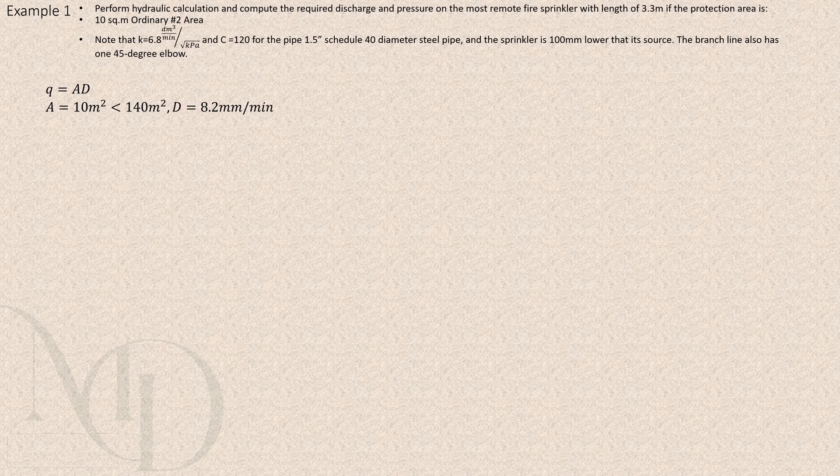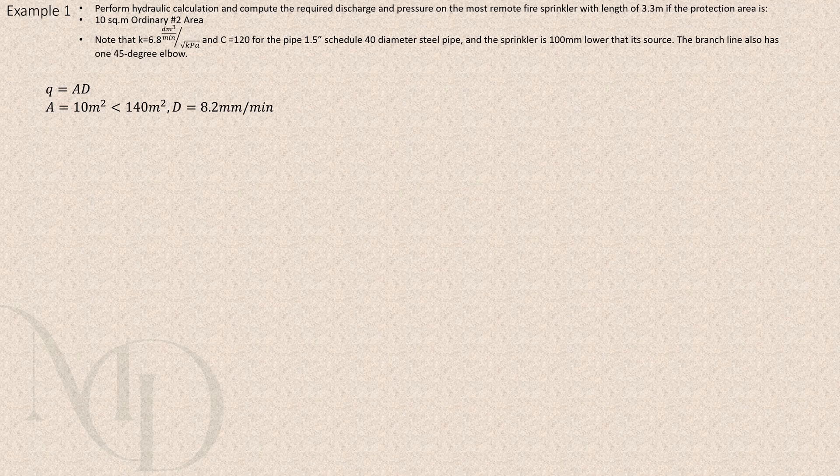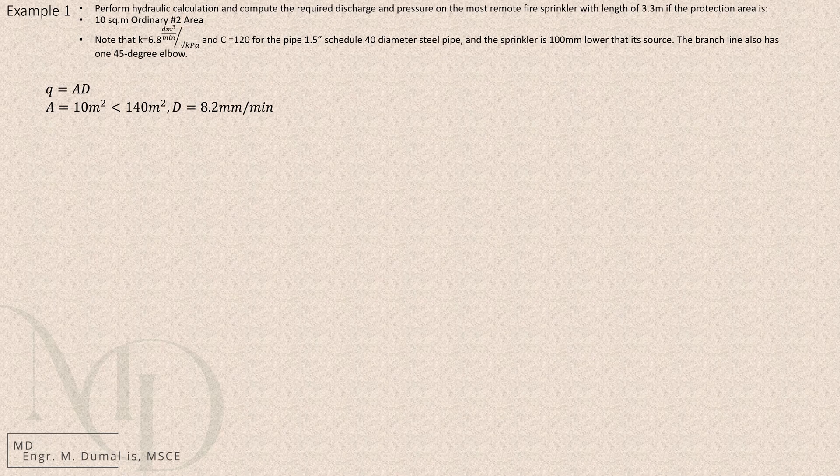Next, we know that the protection area is 10 square meters. Based on that, we need to match the sprinkler type to NFPA figure 19.3.3.1.1 for an ordinary number two hazard. Using the minimum area from that figure, the corresponding density is 8.2 millimeters per minute.